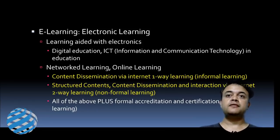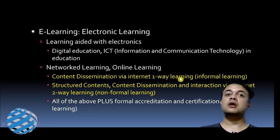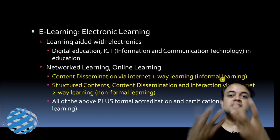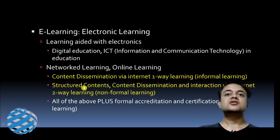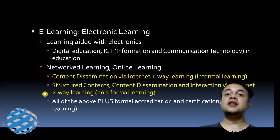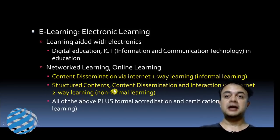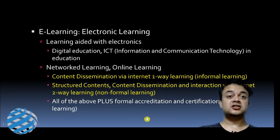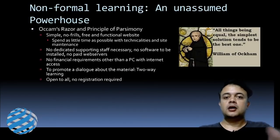The first mode is content dissemination via internet — one-way learning, also known as informal learning. The second is structured content dissemination plus interaction via internet — two-way learning, also known as non-formal learning. The third is formal learning, which is non-formal learning plus accreditation and certification. So there are three kinds of learning.